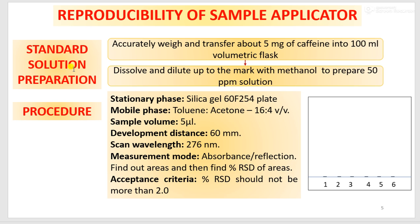First we will see how standard solution is prepared. For that, you have to weigh and transfer 5 mg of caffeine into a 100 ml volumetric flask. And you have to dissolve and dilute the sample up to the mark with methanol to get a 50 ppm solution of caffeine.